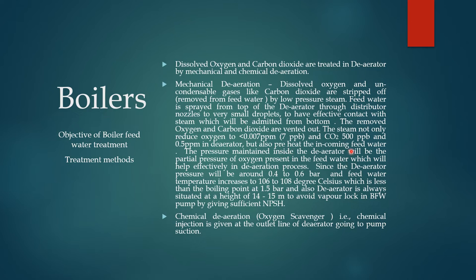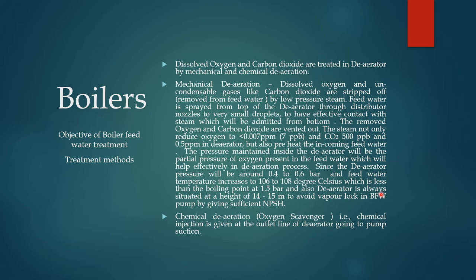The steam also preheats the incoming feed water to around 106 to 108 degrees centigrade. The pressure maintained inside the deaerator is the partial pressure of oxygen present in the feed water, which helps effectively in the deaeration process. The deaerator pressure is around 0.4 to 0.6 bar, and the feed water temperature is increased to 106 to 108 degrees centigrade, which is less than the boiling point at 1.5 bar.